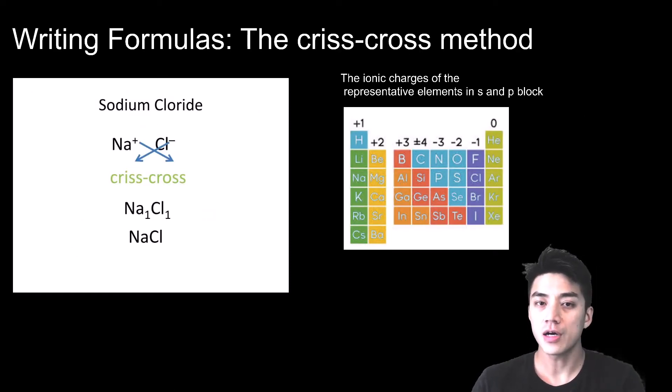Writing formulas for ionic compounds is really simple so as long as you know the charges of the representative elements in s and p block, which is something that I discussed earlier in a different video.